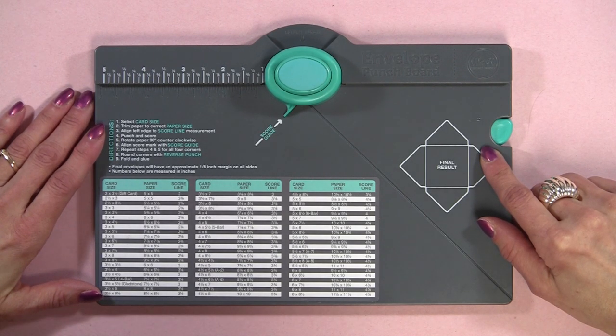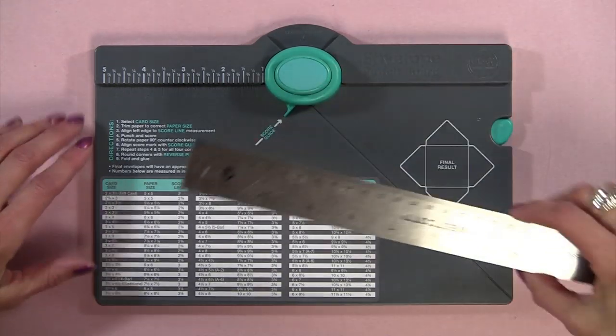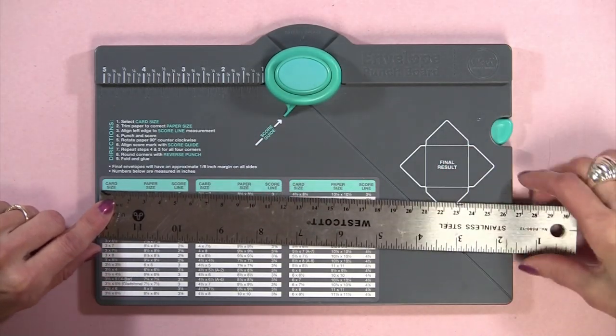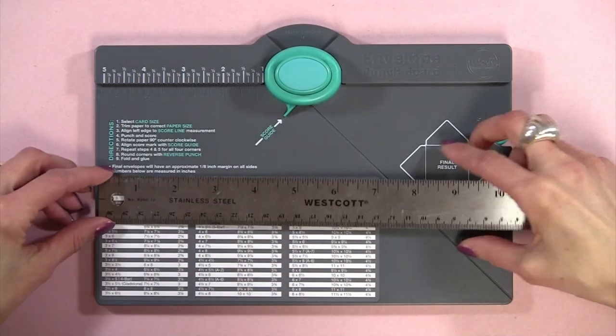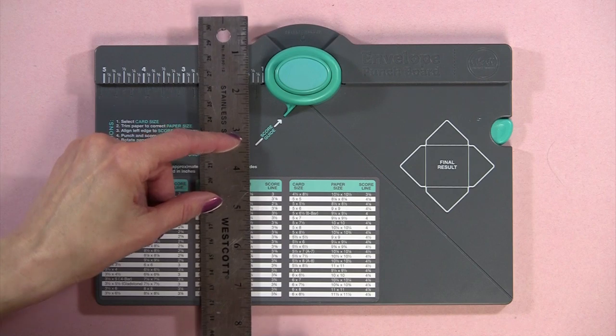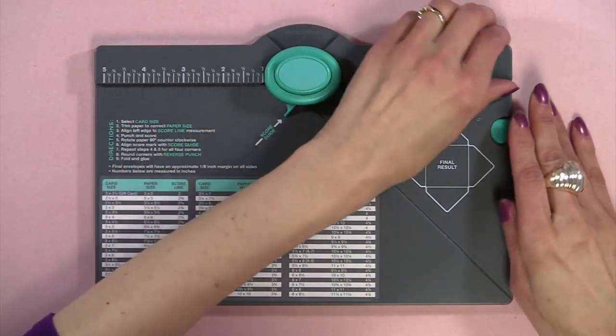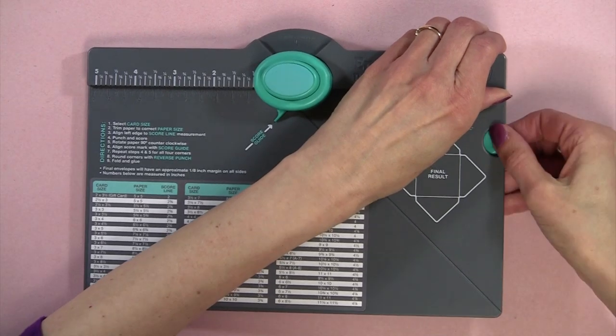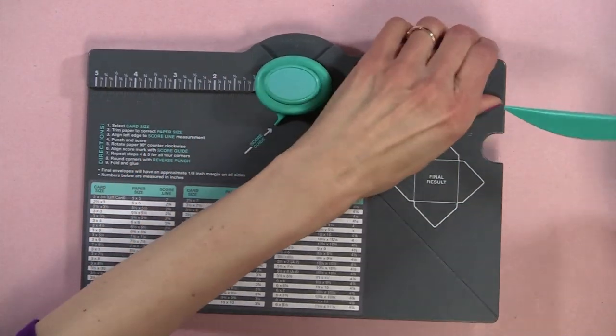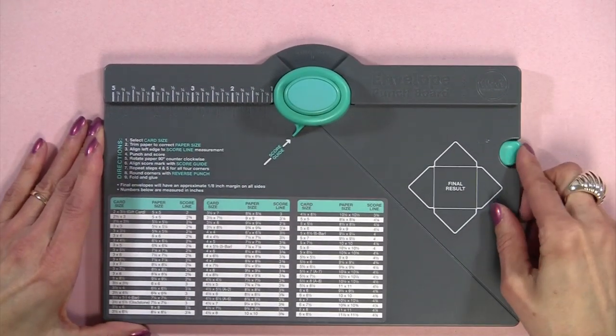It sells for $19.95 and what I really like is the compact size. It measures about 10.5 inches by about 7.5 so it's really compact. There's also a place for the bone folder and you just store it in there.